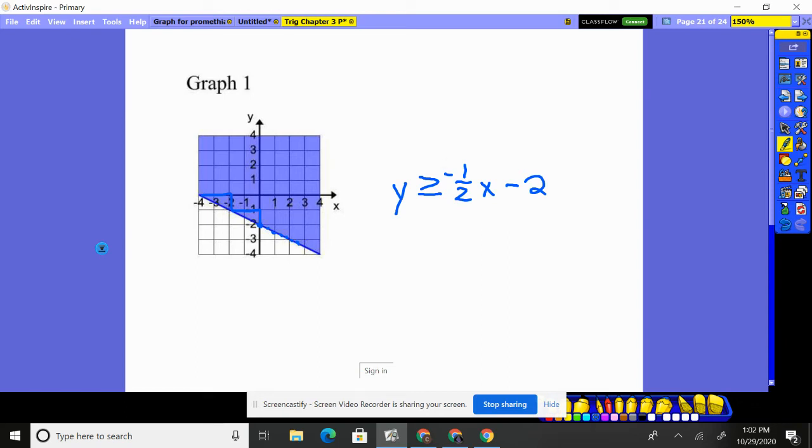Now, since it's going up to the left, it's a negative slope. So it's negative one half x minus two.